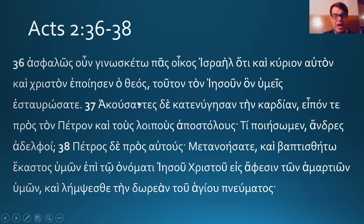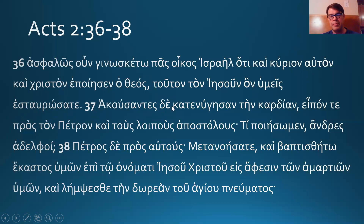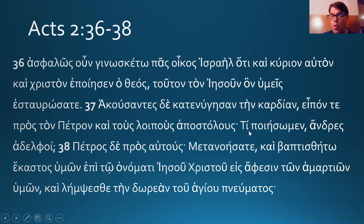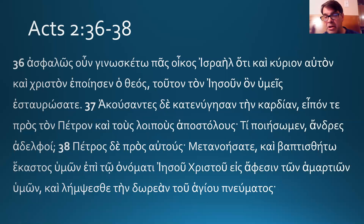Verse 37: and — post-positive, procrastinator, didn't come where it was supposed to, we're going to translate it first — and having heard, participle, aorist active participle, having heard, they were pierced with regard to the heart. They were pierced to the heart. What a vivid image. And they said to Peter and the remaining apostles — capital letter, direct discourse — 'What should we do?' That's a deliberative subjunctive, a deliberative question, subjunctive question. 'What should we do, men, brothers?' — vocative, question mark.